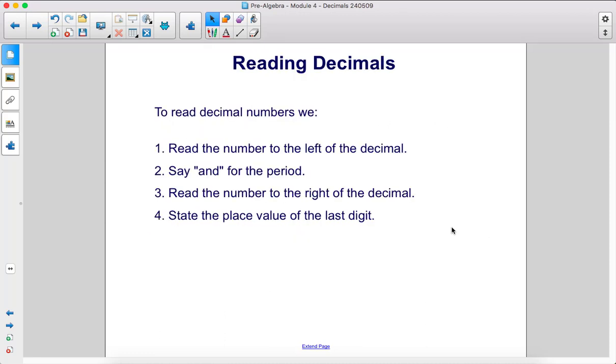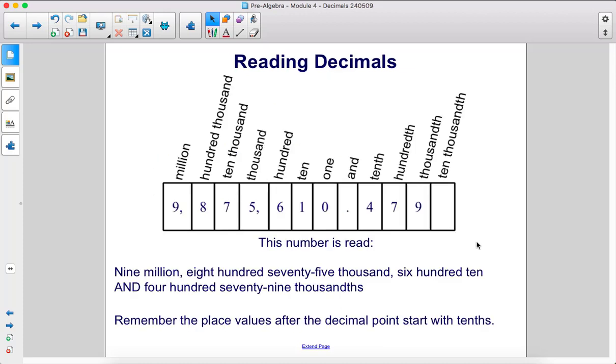To read decimal numbers, we read the number to the left of the decimal, then say 'and' for the period, then read the number to the right of the decimal, and state the place value of the last digit. Therefore, this number is read as... So here's the decimal.